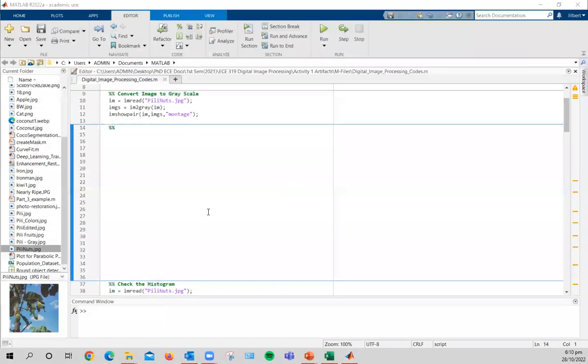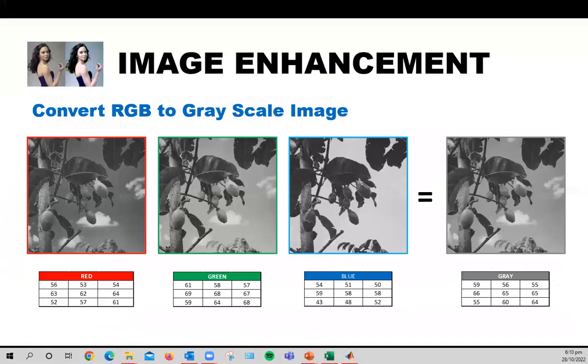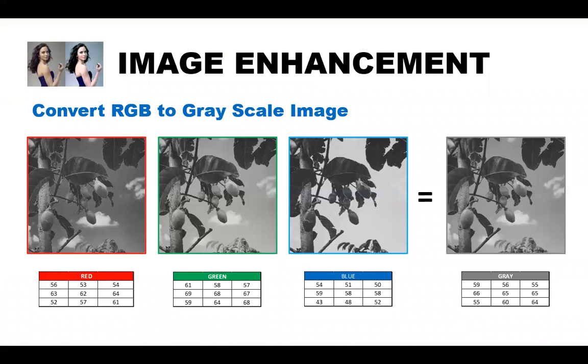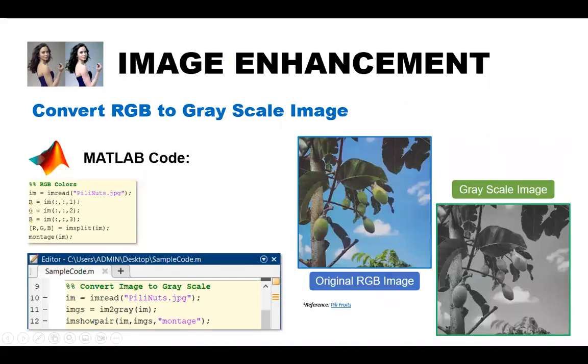Let's go back to the summary slide to wrap up this video. In summary, the algorithm begins with loading the image first, followed by declaring the conversion code, which is the IM to gray. I have seen another code, which is RGB to gray, and the result is just the same. The IM show pair function is just to cascade the input and output picture to show the comparison.